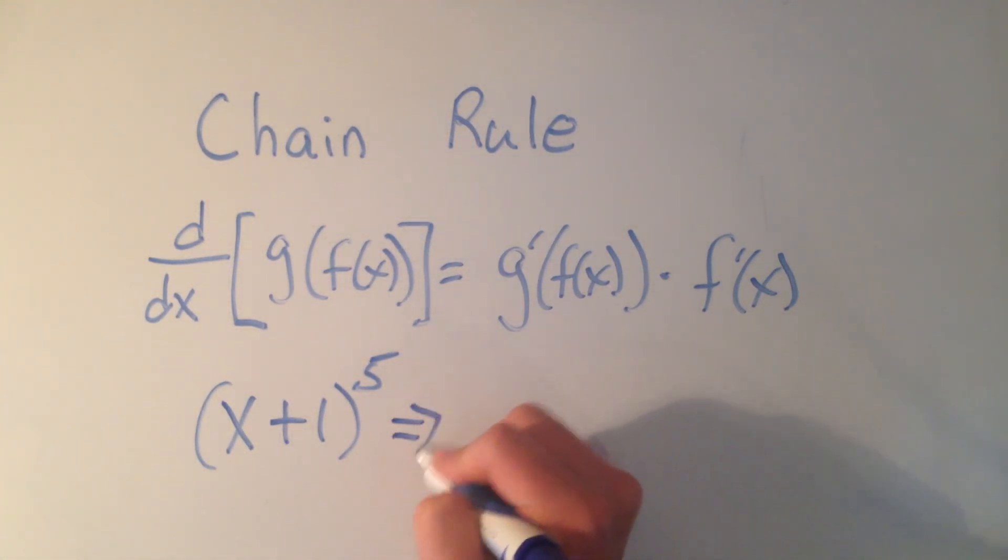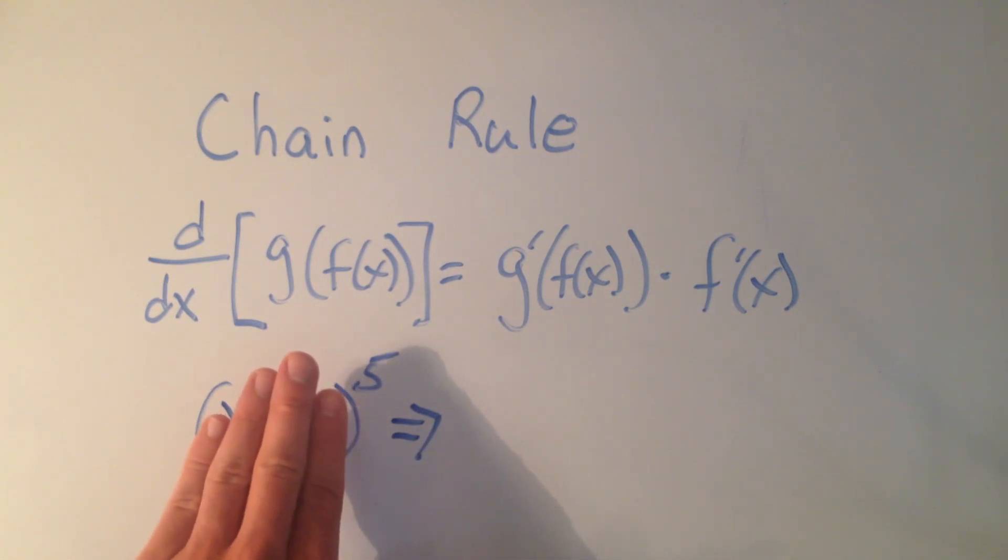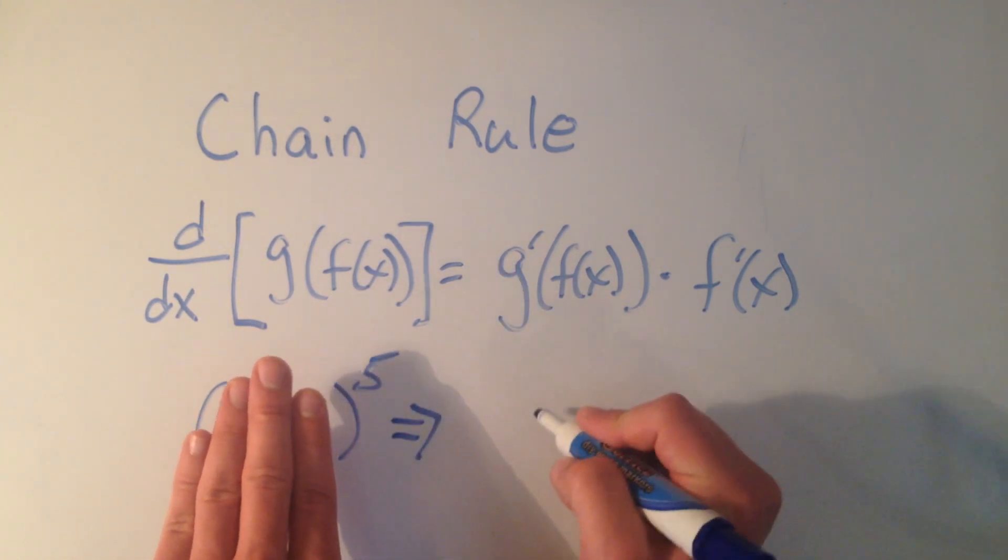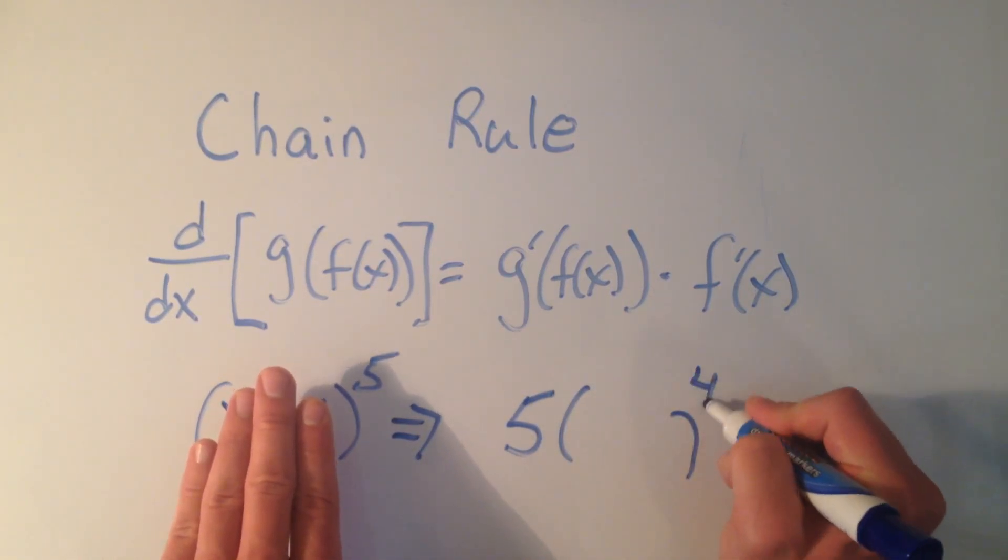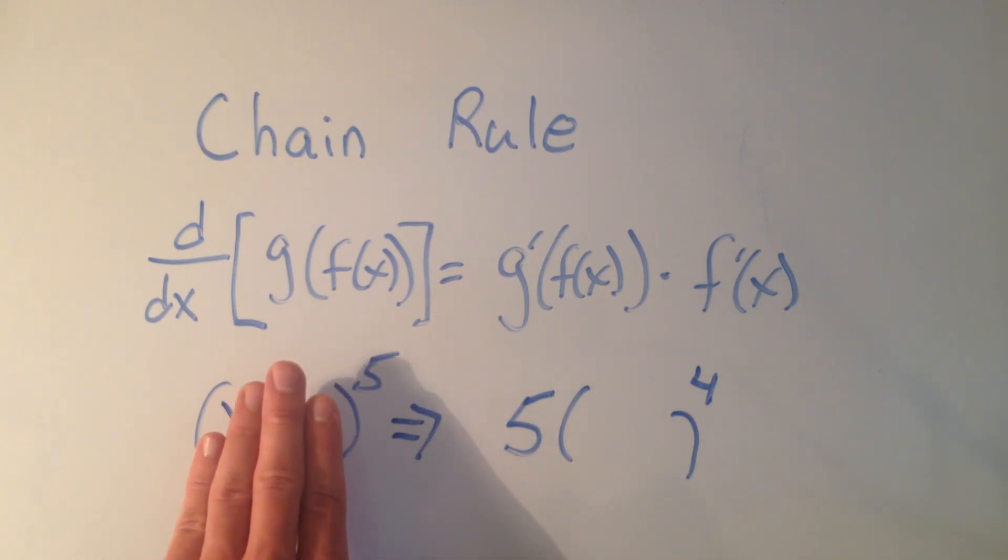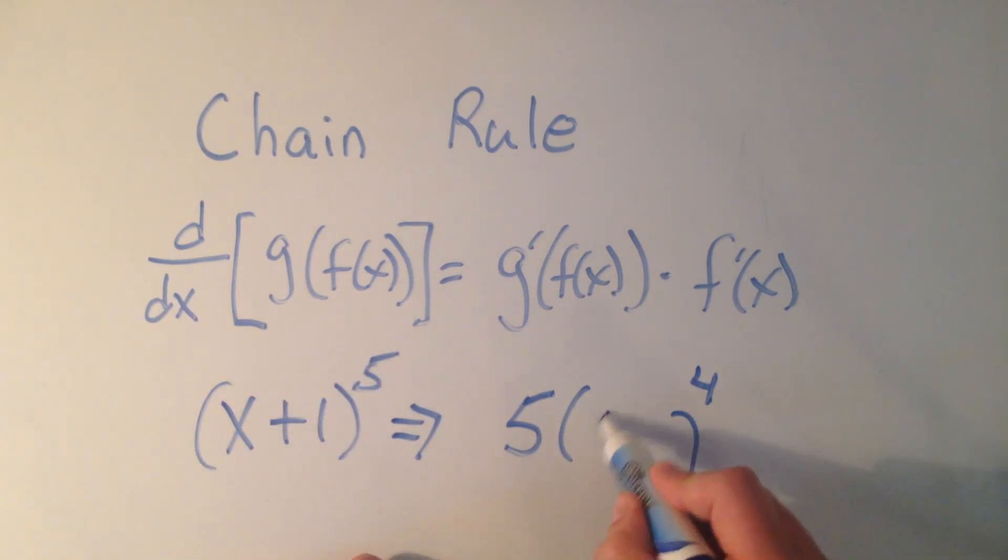But if we apply the chain rule, the chain rule says I pretend the inside isn't there. I'm just going to take the derivative normally. So if this was x^5, let's just pretend it's just x^5, I would do the power rule, right? I would write a 5 there, and I would copy that, and I would subtract 1 from the power, right? But it's not just x there, it's x+1.